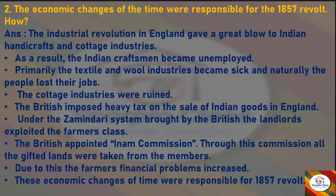Under the Zamindari system brought by the British, the landlords exploited the farmer classes. The British appointed a land commission through which all the gifted lands were taken from their members. Due to this, the farmers' financial problems increased. These economic changes of the time were responsible for the 1857 revolt.